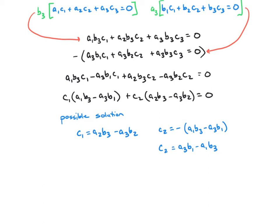Notice: C₁ is the very first component in the cross product formula between A and B — it matches perfectly. C₂ also matches perfectly. So these two expressions we've identified are the first and second components of vector C, which is perpendicular to both A and B. Now we need to figure out the third component, C₃.